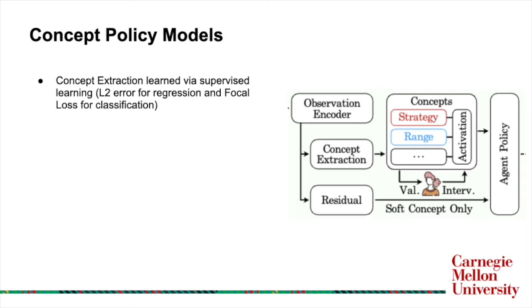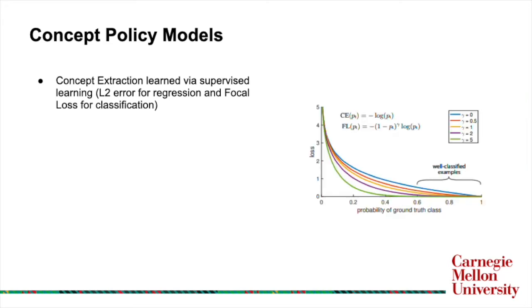In terms of implementation details, we use supervised learning techniques to learn the concept extraction part of the layer. For regression concepts, we use L2 error, and for classification, we use focal loss, which is a cross-entropy variant designed for class imbalance situations which are likely to occur in our concept setting, as some concepts may be significantly rarer than others.